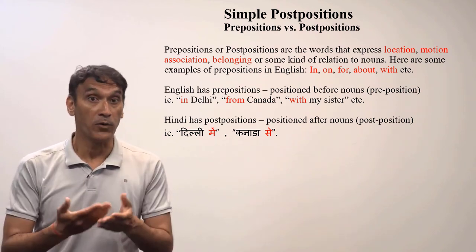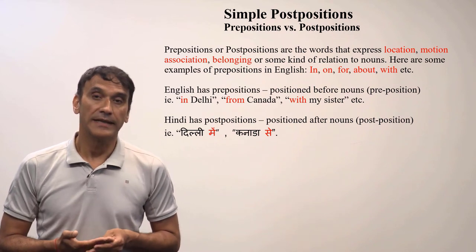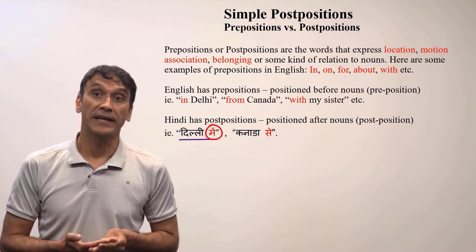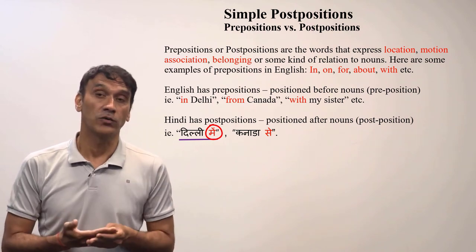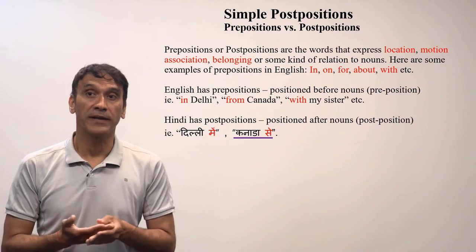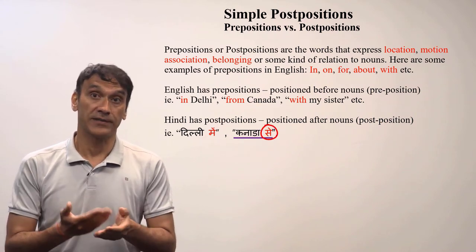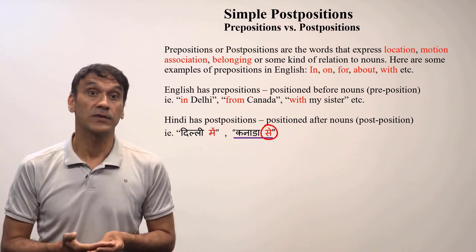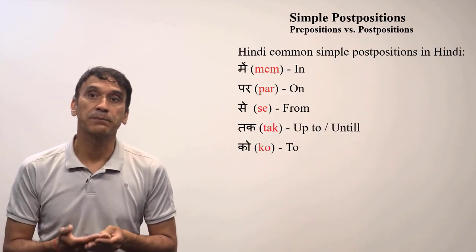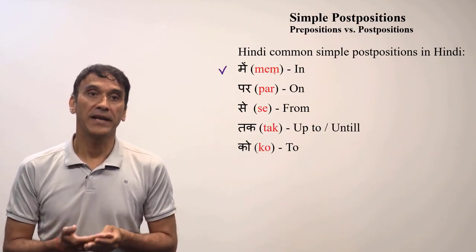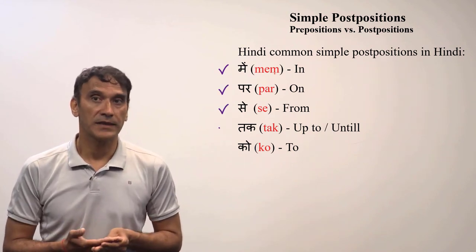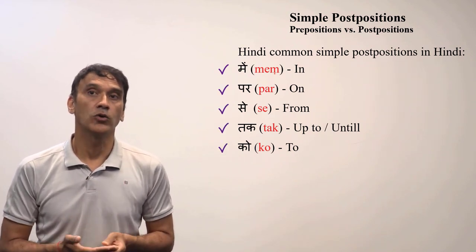Hindi, on the other hand, has postpositions — their position is after the noun. For example, 'Delhi mein' means 'in Delhi': the word 'mein' comes after Delhi. 'Canada se' means 'from Canada': 'se' comes after Canada. Hindi has five simple postpositions: mein (in), par (on), se (from), tak (up to), and ko (to).